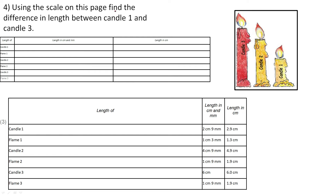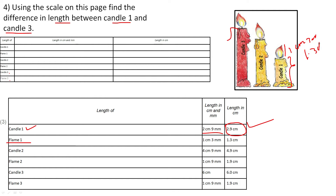Using the scale, find the difference in length between candle 1 and candle number 3. We measure candle 1: 2 centimetre and 9 millimetre, written as 2.9 centimetre. Flame 1: 1 centimetre and 3 millimetre, written as 1.3 centimetre. Candle 2: 4 centimetre and 9 millimetre, written as 4.9 centimetre. Flame 2: 1 centimetre and 9 millimetre, written as 1.9 centimetre.